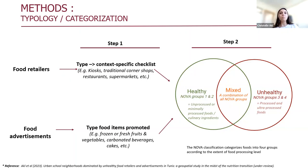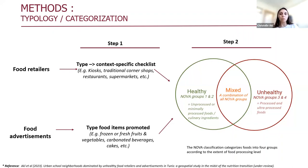For food advertisements, a similar classification was followed. Food advertisements were first classified based on the type of food item promoted — for example, fresh fruits and vegetables, carbonated beverages, cakes, etc. These were further classified into the three groups derived from NOVA. An advertisement featuring only ultra-processed food would be classified as unhealthy, and an advertisement including both healthy and unhealthy food items was classified as mixed.